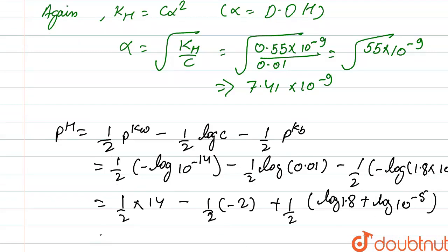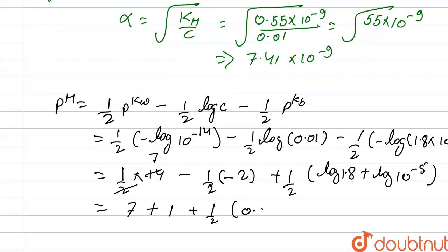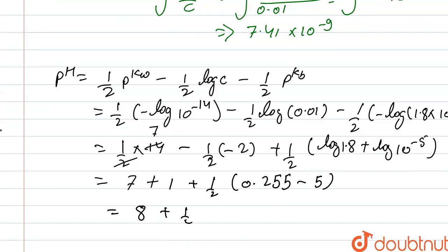So it becomes 7 plus 1, plus half of 0.255 minus 5. And it becomes 8 plus half of minus 4.745.